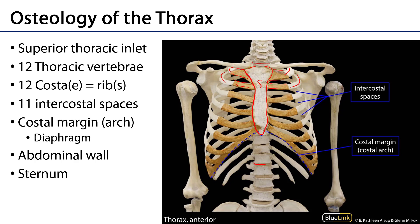Between these ribs are intercostal spaces, and the intercostal spaces are comprised of three major layers of muscle: external, internal, and innermost intercostal, as well as the neurovasculature that serves these muscles.